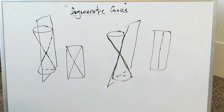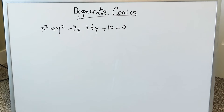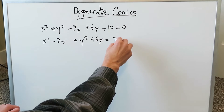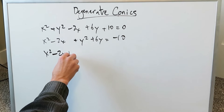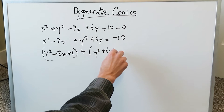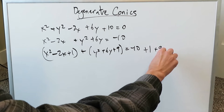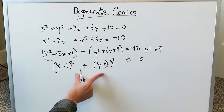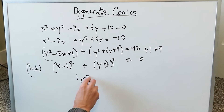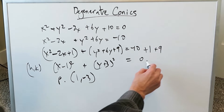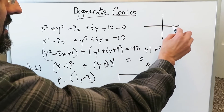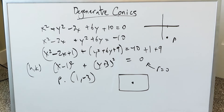Let's look at our worked-out computation examples. Here is an equation of what might appear to be a conic section. Evaluating it by completing the square: bring the x terms together — x squared minus 2x — and the y terms together, taking the constant to the other side. Completing the square gives x squared minus 2x plus 1, and y squared plus 6y plus 9, with the same constants on the other side, equaling 0. This gives (x minus 1) squared plus (y plus 3) squared equals 0. The center is (1, -3) and the radius is 0, so it represents nothing more than a point. This is an example of a degenerate conic.